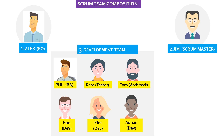Typically, a scrum team involves three roles. First, the product owner. Alex is playing the role of product owner, interacting with the business and the end users — that is Jane's team and her customers — to understand their needs and requirements. He will play the main link between end users and the scrum team. He also maintains and prioritizes the product backlog.